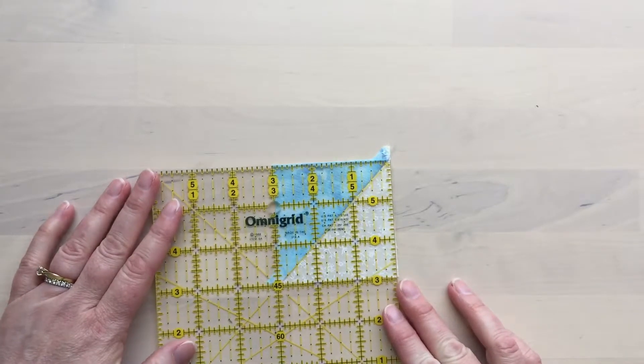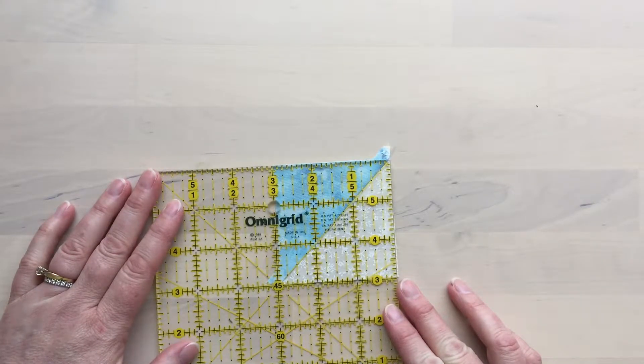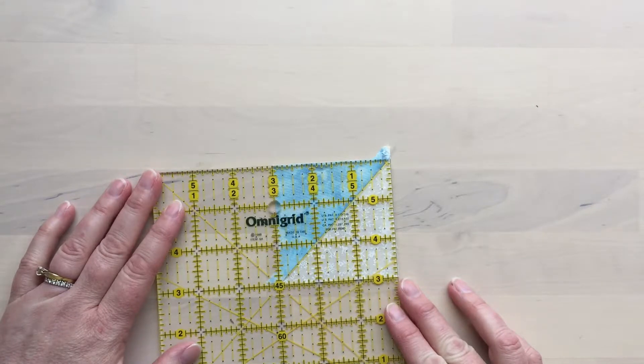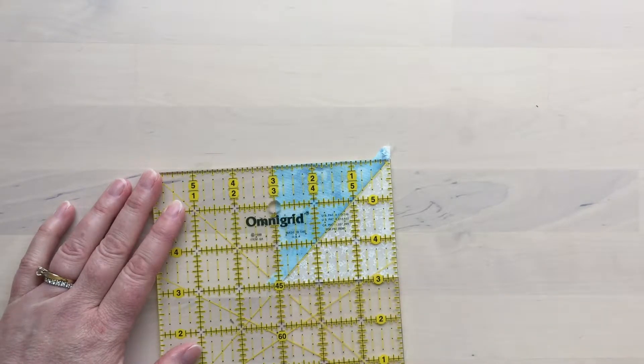I want my finished unit to be two and a half inches that means with seam allowance this square should be three inches. You might want to snip off the dog ears.